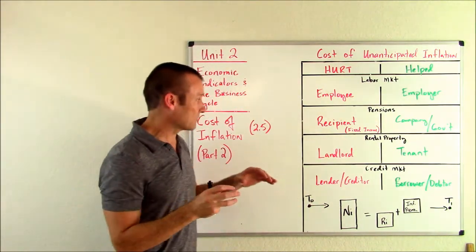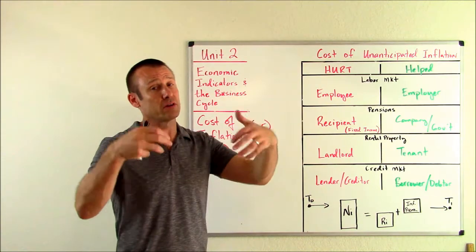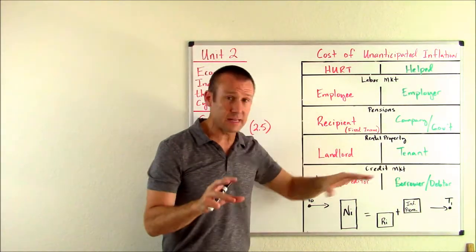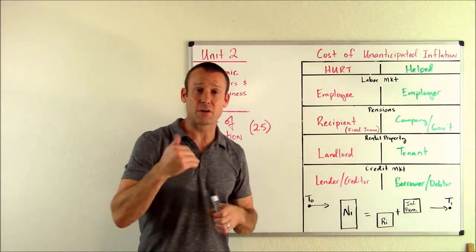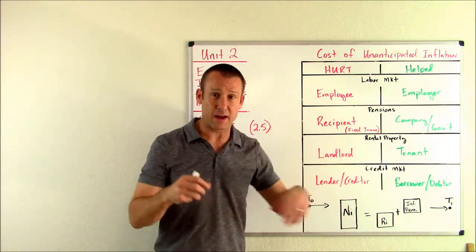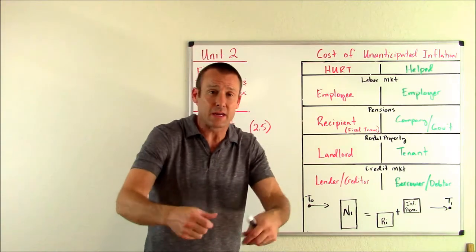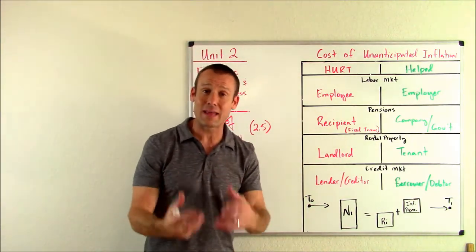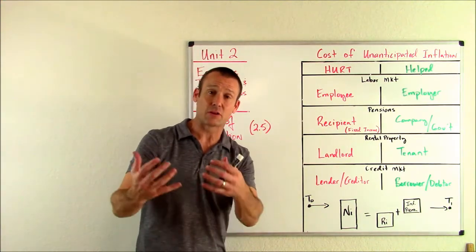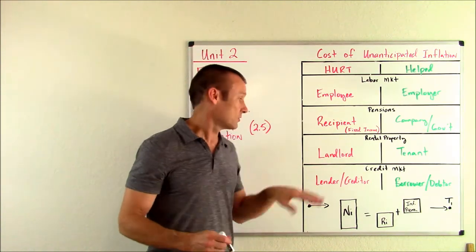Rental property: again, we've got a contract situation. Notice that in all four of these areas, we've got contract situations where we had to anticipate inflation, and for this video, inflation ends up being higher than anticipated. We've got the tenant and the landlord. The tenant is actually helped — they're the payer, the ones who have to pay the lease. They agreed to pay with dollars that are actually worth less than they expected, which means those dollars are easier to obtain. The tenant is helped. The landlord, on the reverse side, is hurt — they're being paid with dollars that are worth less than they expected.